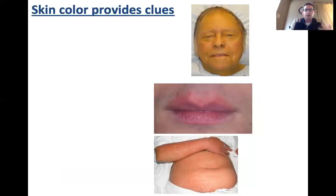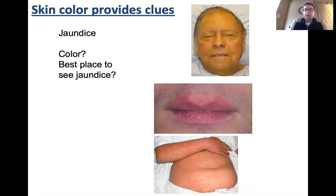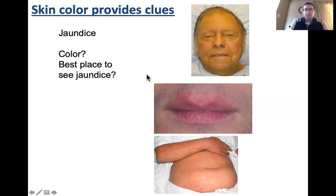The color of an individual's skin can provide clues about other disorders. Jaundice gives the skin a yellow color, and the best place to identify it is in the whites of the eyes, where it becomes very obvious. This is usually a sign of a problem with the liver or the gallbladder. Liver failure leads to jaundice because the liver is responsible for the breakdown of red blood cells, and if it's not functioning properly, bilirubin builds up in the blood, giving a yellowish color to the skin and eyes.